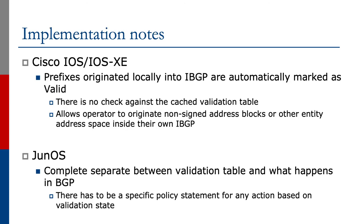I want to look at some implementation notes. You need to be a little careful with vendor defaults. Juniper has followed the RFC quite closely and left all policy to the end user — the operator must configure what policy they need. The connection to the RPKI cache is configured and simply downloads the validation table, with no automatic linkage to the BGP table. In Cisco IOS, Cisco automates as much of this as it can — in fact the RFC recommends not doing this, but Cisco does it anyway. Another thing to note is that prefixes originated locally into IBGP are automatically marked as valid, with no check against the cached validation table. The idea is that the operator may need to originate non-signed address blocks or other address space inside their own IBGP.